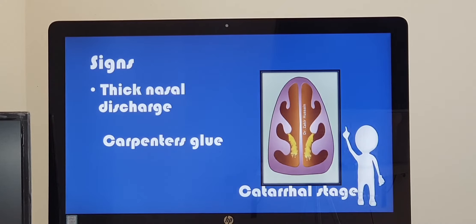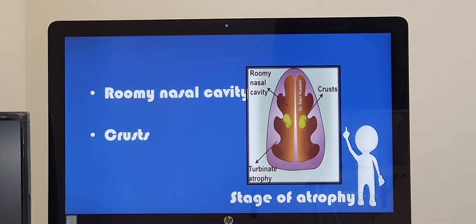Examination part, when you do a nasal endoscopy. The first part, that is the catarrhal stage, first stage, you have thick mucoid nasal discharge and it is very thick. That is why it is termed as carpenter's glue. And the second stage finding will be stage of atrophy, the whole nasal cavity will be roomy and multiple crusts will be seen everywhere.